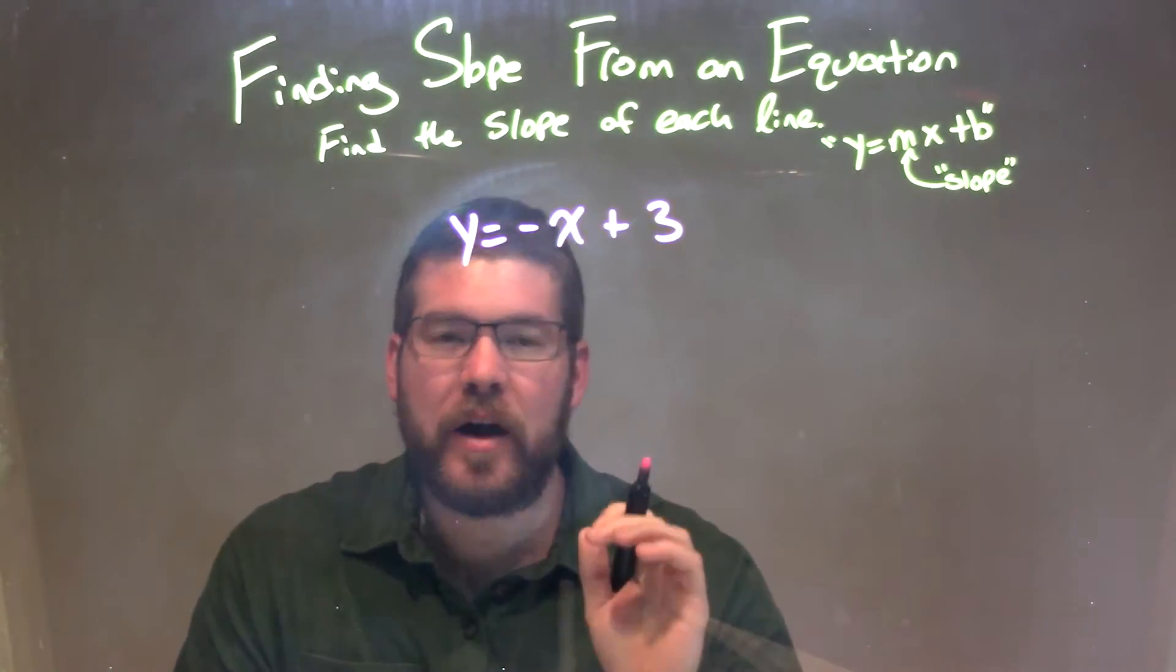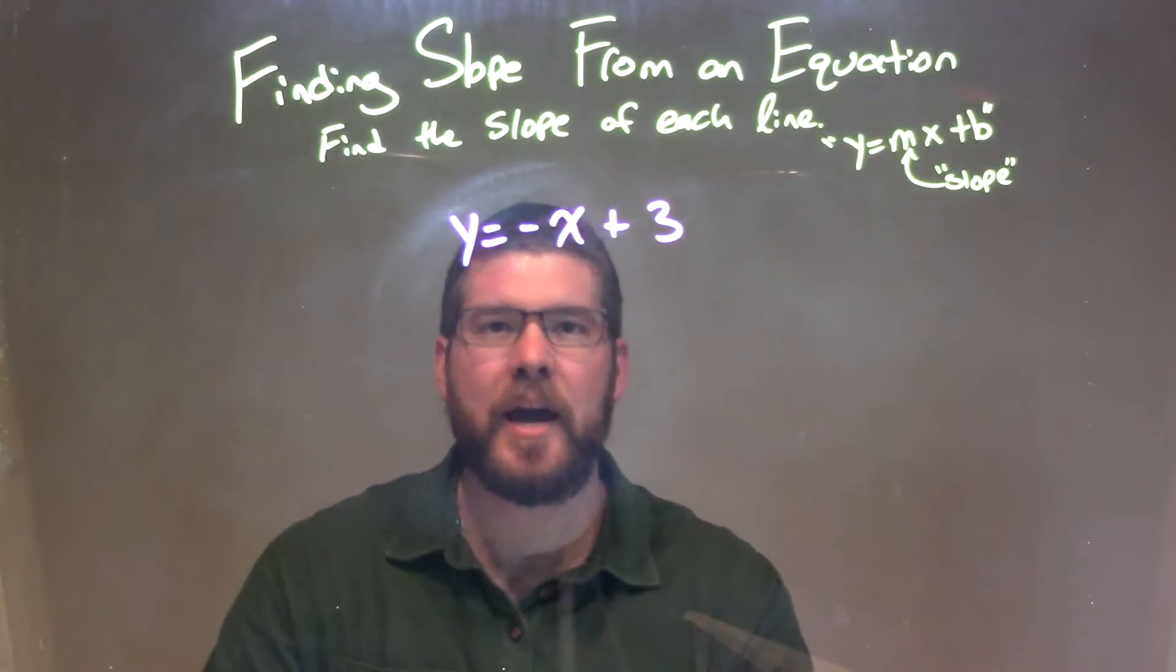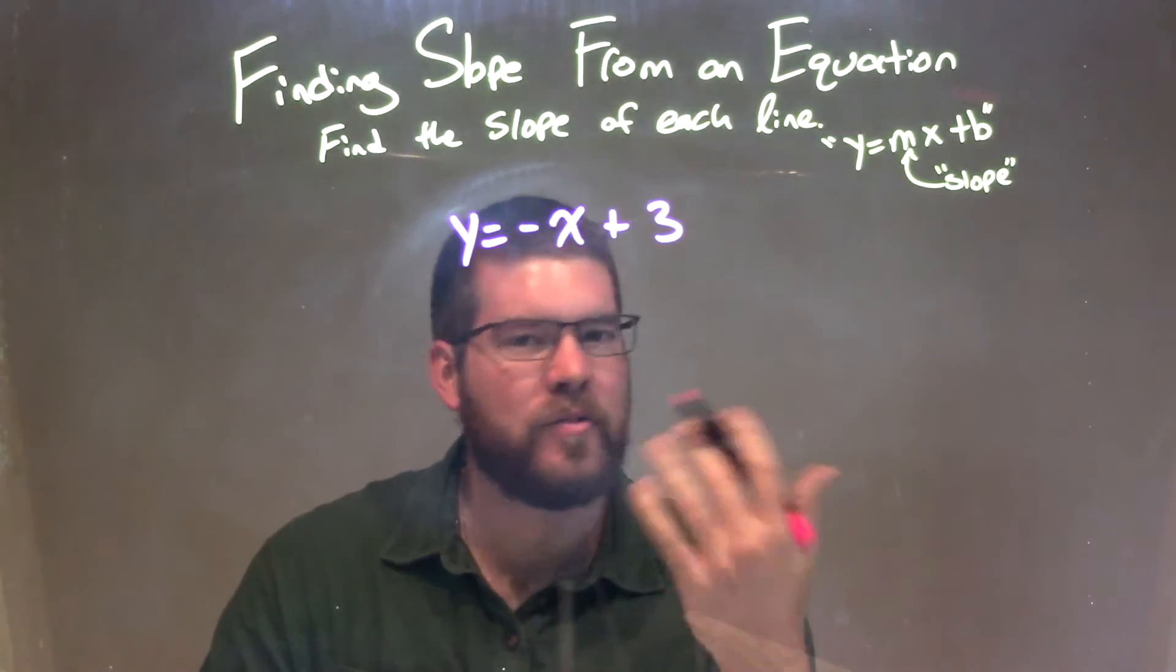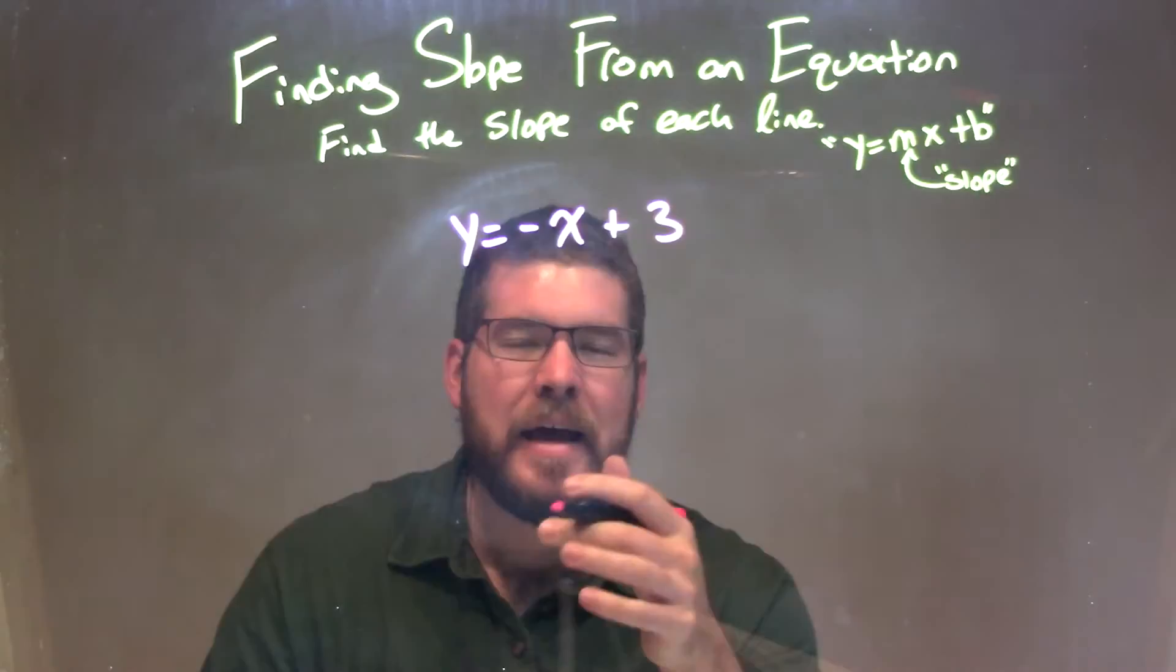The key is identifying what the m value is, and be careful. We see a negative out front. So many students will write our slope m equals negative x. That's incorrect.